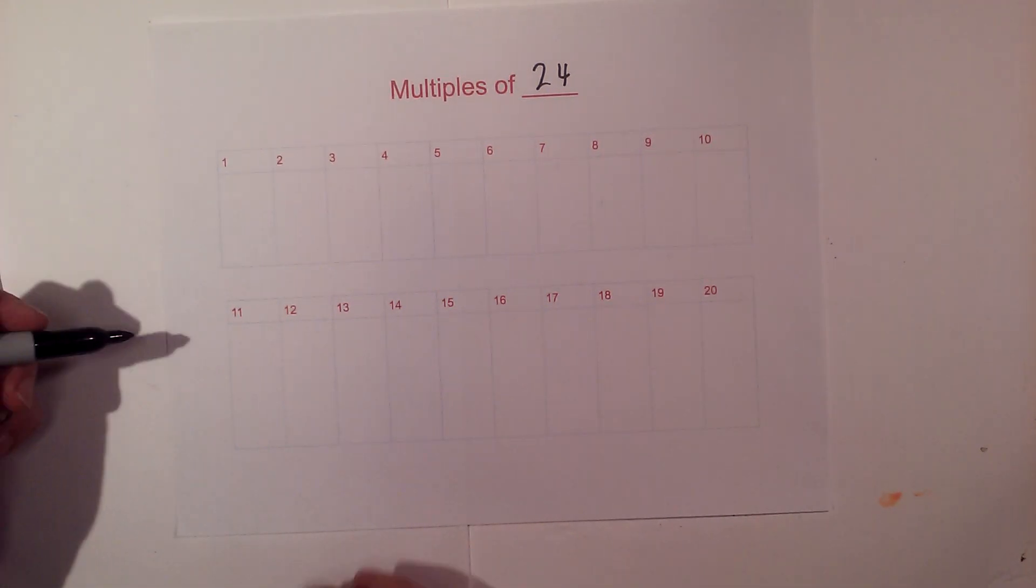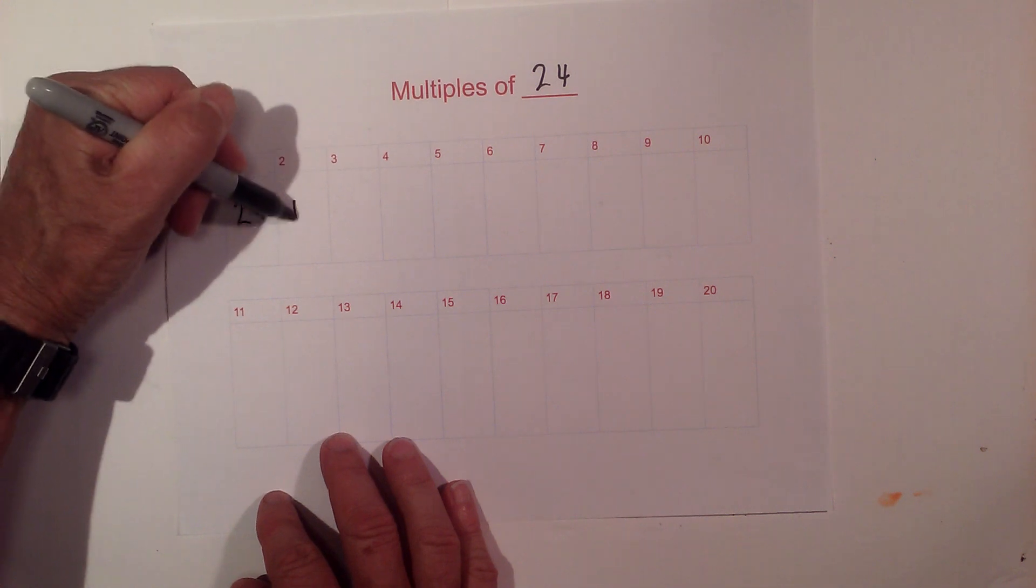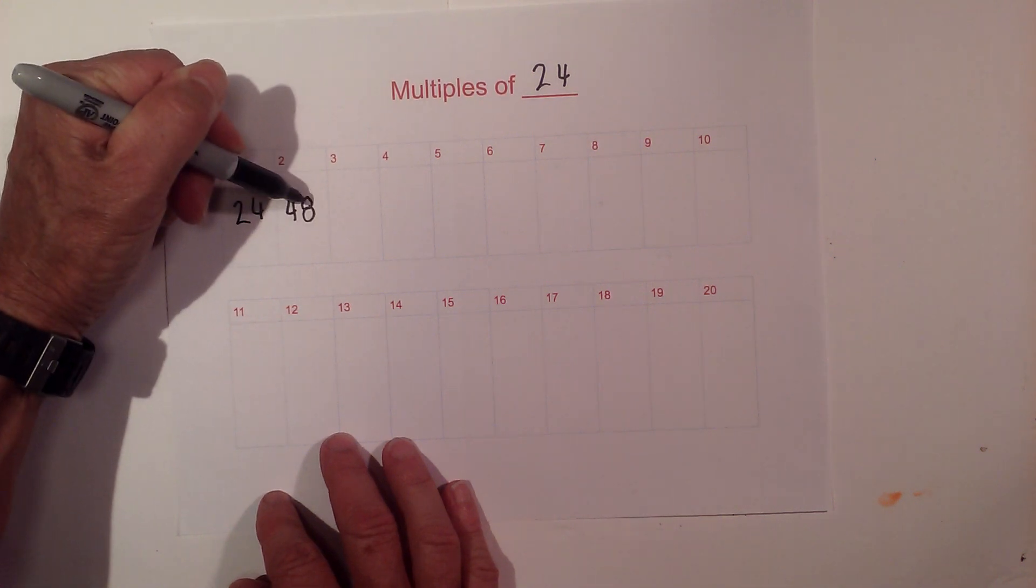The multiples of 24. We have 24. 24 times 2 is 48.